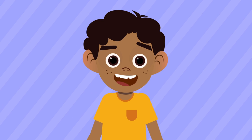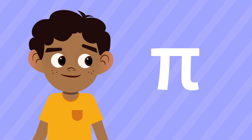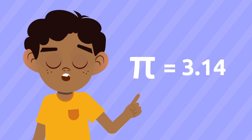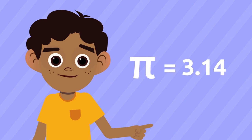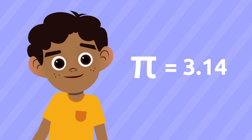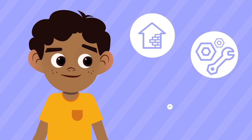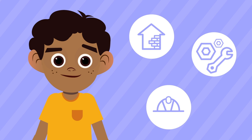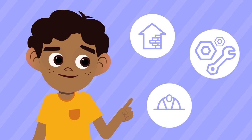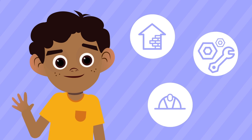For every circumference in the world, pi is always the same number — that is to say it equals 3.14. If you want to learn more about it, watch our video about the number pi. Knowing how to calculate the length of a circumference is very important in construction, mechanics, or engineering. How would you like to try with another example?